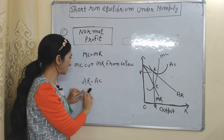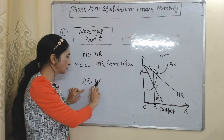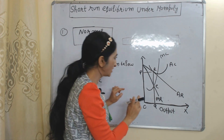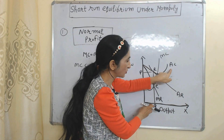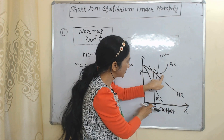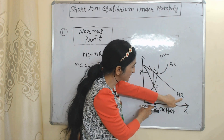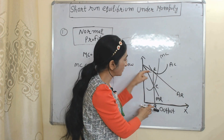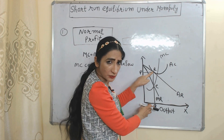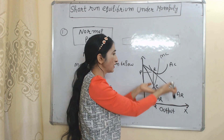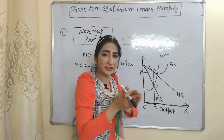The third condition of normal profit is AR equal to AC, meaning average revenue is equal to average cost. Here you can see RQ is our average cost because point R touches our average cost curve, and point R also touches our average revenue curve. So average revenue is also equal to RQ — that means average revenue equals average cost.